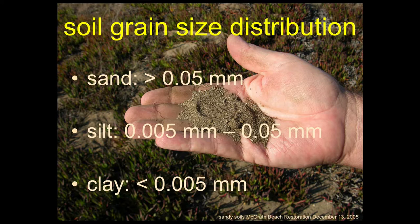Sand is considered sand if the grain size — the width of the particle — is greater than 0.05 millimeters. Silt is smaller than that, down to 0.005 millimeters. Clay is smaller than that. So: sand is coarse, clay is very, very fine, and silt is in between.